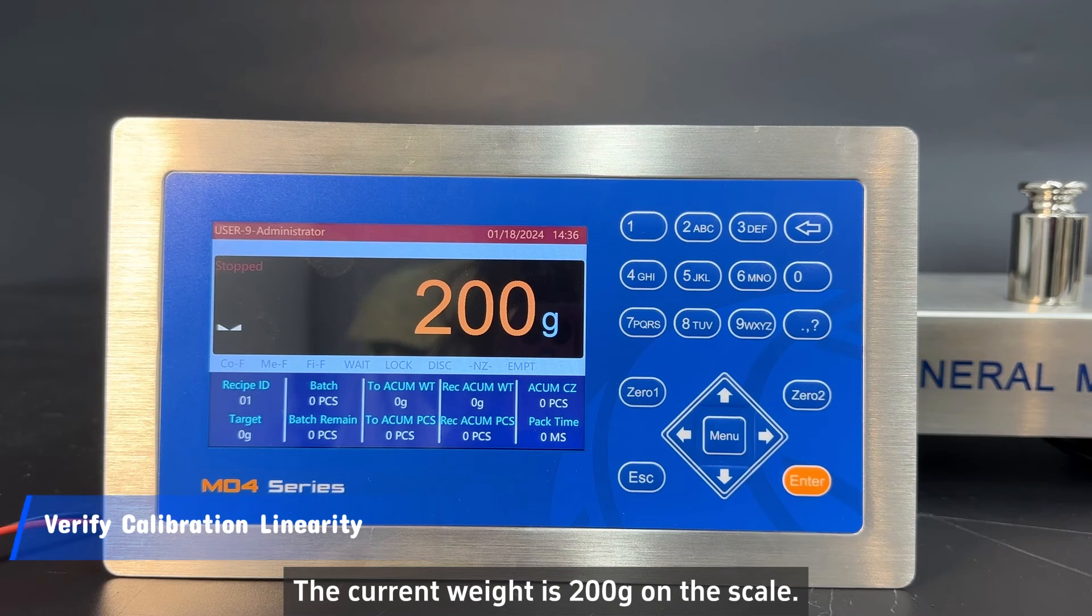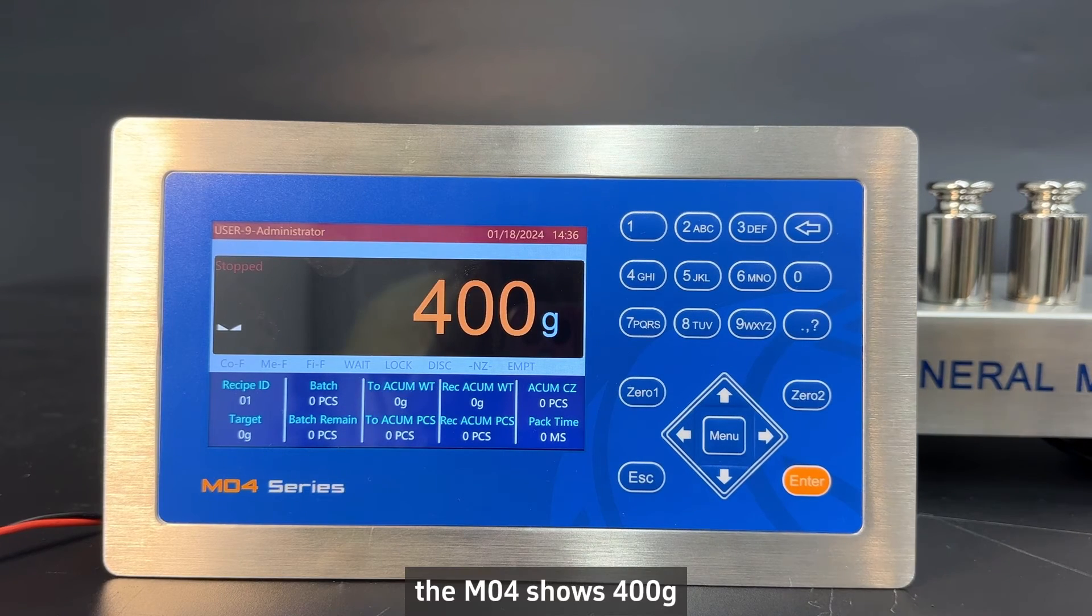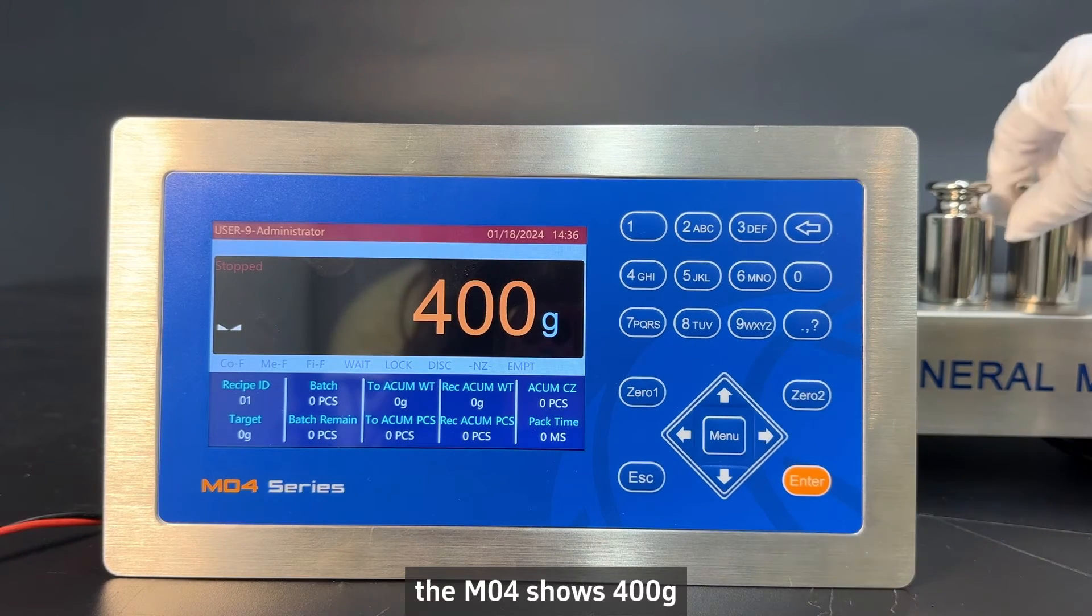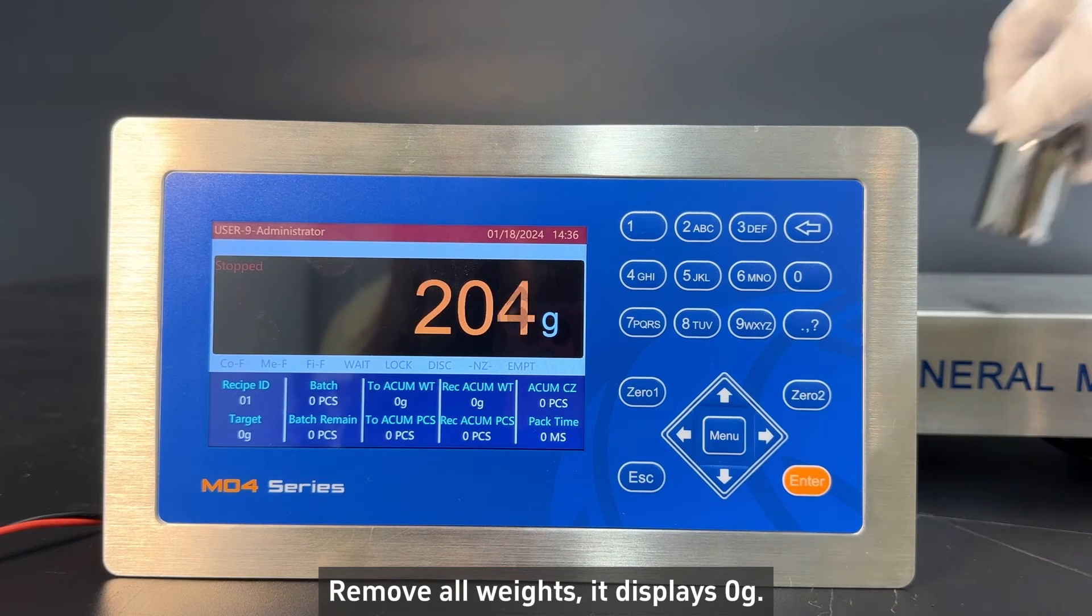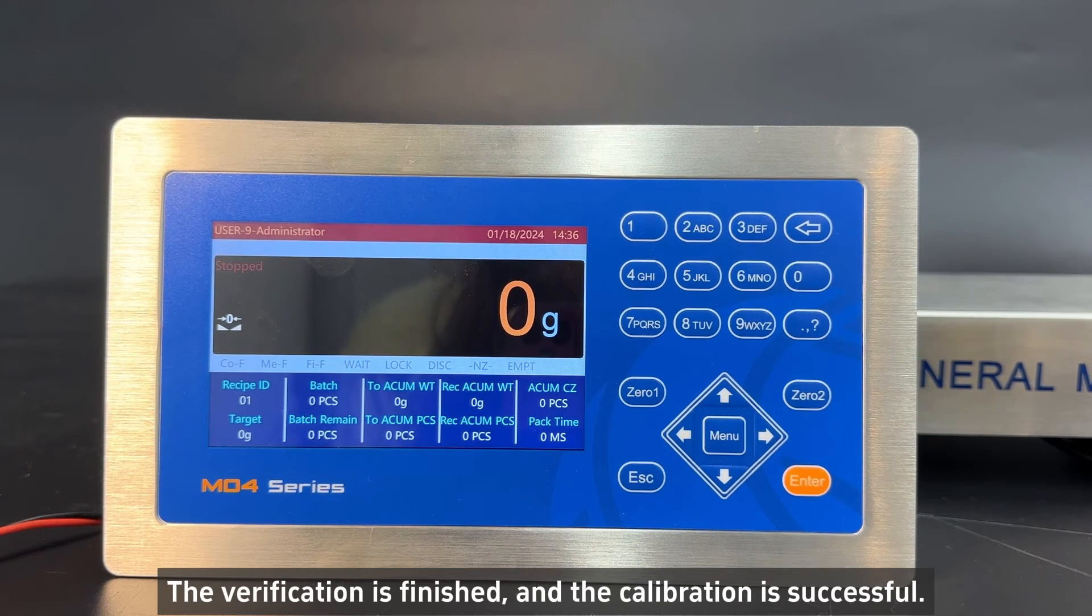The current weight is 200 gram on the scale. Put on another 200 gram weights. The M04 shows 400 gram. Remove all weights. It displays zero gram, which conforms to reality. The verification is finished, and the calibration is successful.